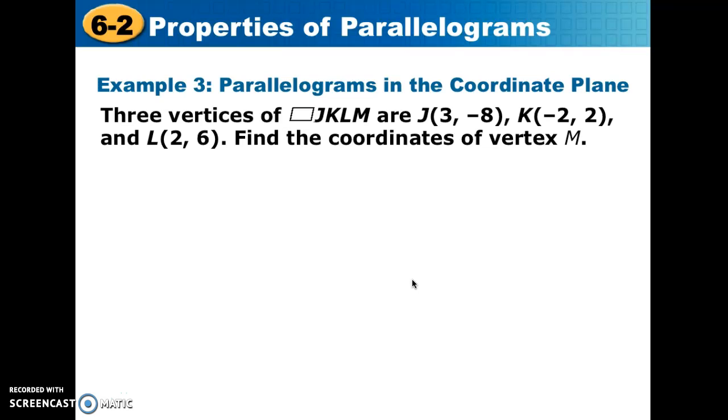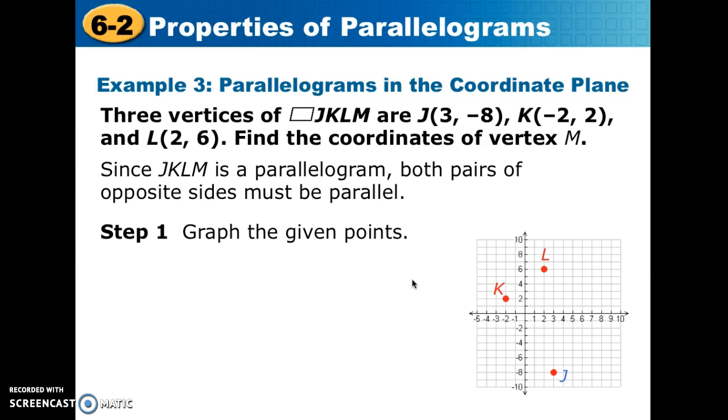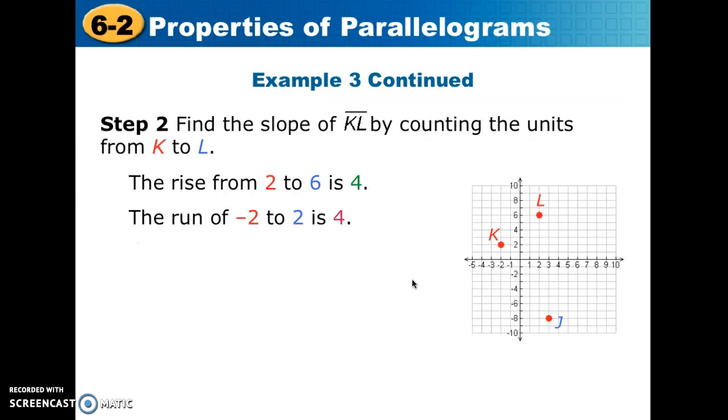Now, on example 3, what we're going to do first of all is graph three points, J, K, and L. What we want to do is to find the coordinates of the missing point or missing vertex of the parallelogram, M. So first things first, let's graph. Once we've got those, what we're going to do is we're going to find the slope. And if we find the slope between points K and L, we know to get from K to L, you have to go up 4 and you have to go to the right 4.